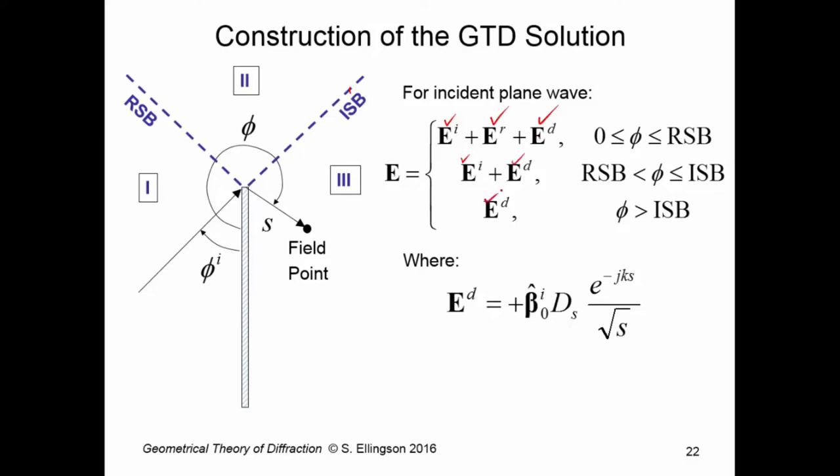We need to say what the diffracted field is. We have the other two components described mathematically already. Diffracted field here is simply beta naught super i hat. The soft diffraction coefficient, that's the only component that exists in this case. E minus j k s divided by the square root of s. Where note here, I'm using φ in place of φ super d and s in place of s super d. Because when we put together the whole solution, of course, we don't want to make the solution dependent on the diffraction parameters. We want to have it in more general descriptions of the coordinates.